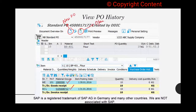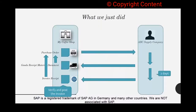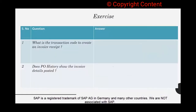Overall, in the first video we created a PO, in the second video we created a goods receipt against the PO — remember, always with reference to the PO — and in this video we are creating an invoice, again with reference to the purchase order. Always with reference to the purchase order. Let's do an exercise on invoice receipt.